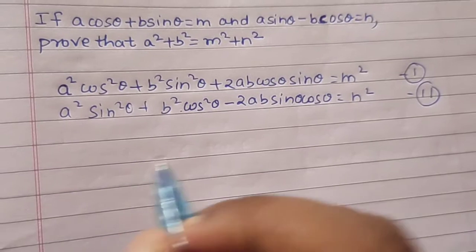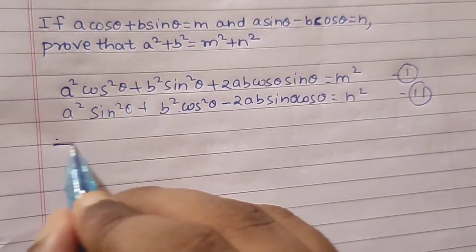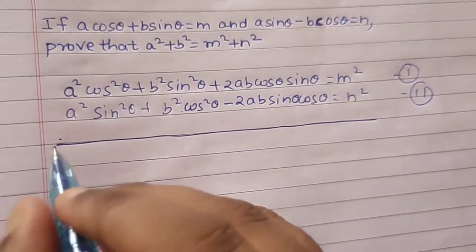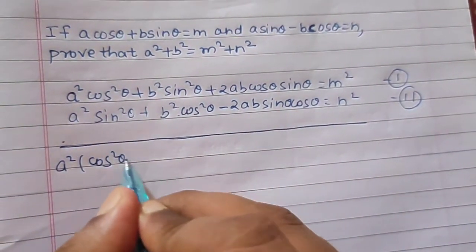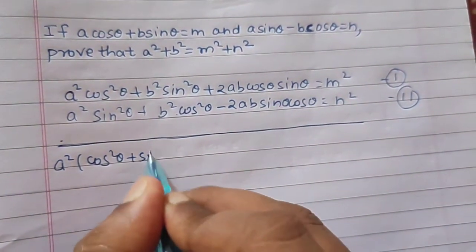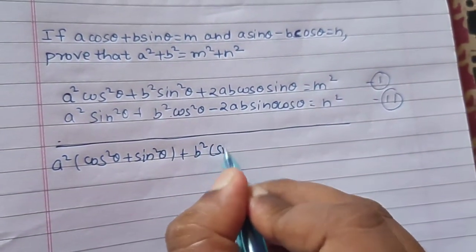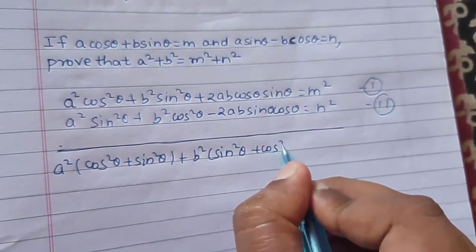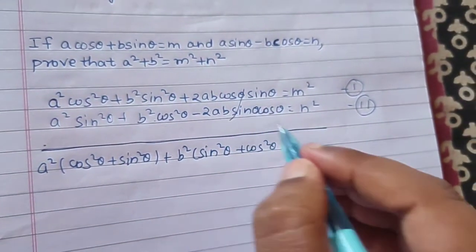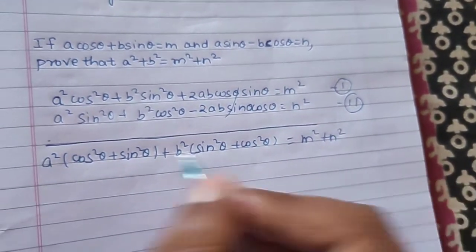Now we add both equations. With a² we get cos²θ + sin²θ, and with b² we get sin²θ + cos²θ. The 2ab cross terms cancel out, and on the RHS we get m² + n².